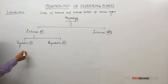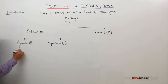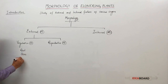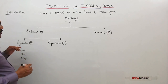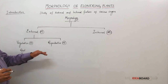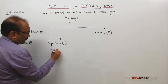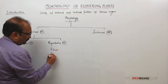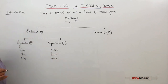The study of external features of vegetative organs — root, stem and leaves — is called vegetative morphology. And the study of external features of flower, fruit and seed is called reproductive morphology.